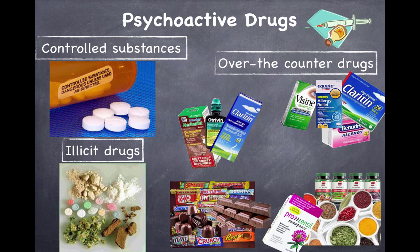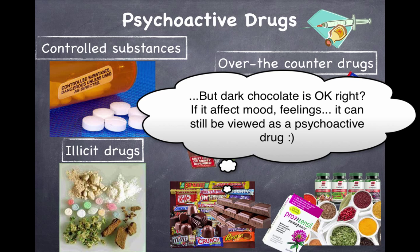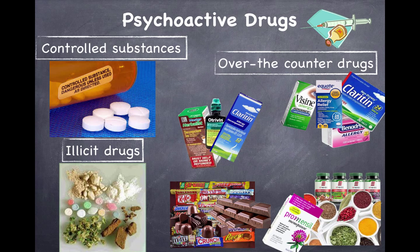Controlled substances include anything approved for medical use — for example, medication used in mental health and psychological disorders is a psychoactive drug. Illicit drugs are illegal. Over-the-counter drugs like antihistamines can be powerful and even addictive, as can decongestants, herbal preparations, and even certain foods like chocolate, which can alter consciousness, mood, perception, or thought.